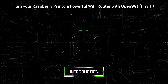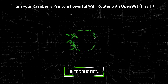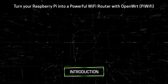So what is the OpenWRT project? The OpenWRT project is a Linux operating system targeting embedded devices. Instead of trying to create a single static firmware, OpenWRT provides a fully writable file system with package management. This frees you from the application selection and configuration provided by the vendor and allows you to customize the device through the use of packages to suit any application. For developers, OpenWRT is the framework to build an application without having to build a complete firmware around it.